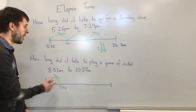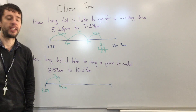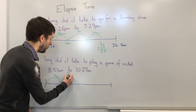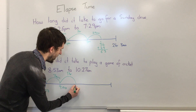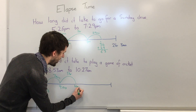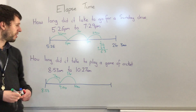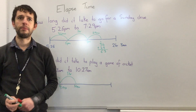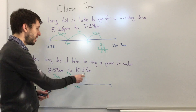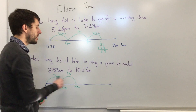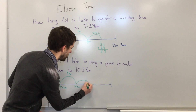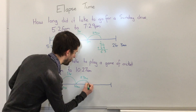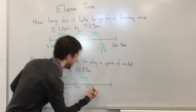Then I look at the next hour, which is 10, so I'm adding 1 hour and it takes me to 10 a.m. The next thing I need to think about is how many more minutes until 10:27, and that is 27 minutes because I'm already at 10 o'clock. So I'm adding 27 minutes to get to 10:27.